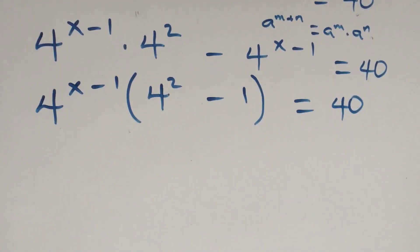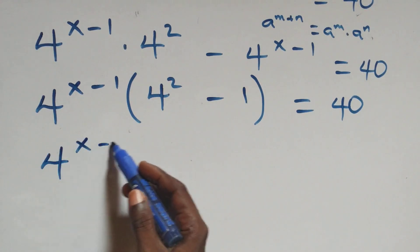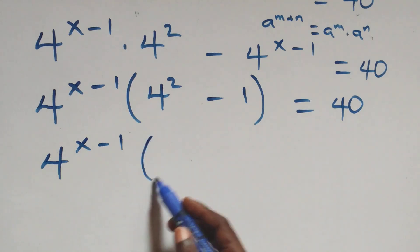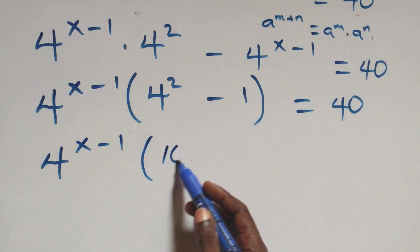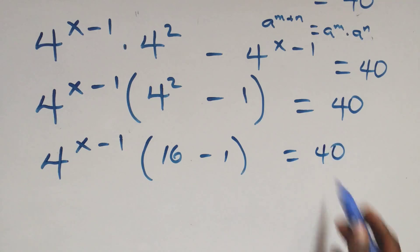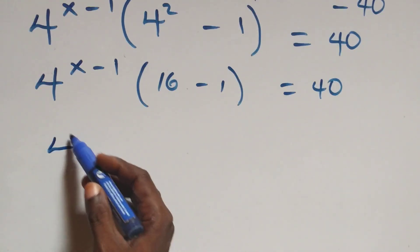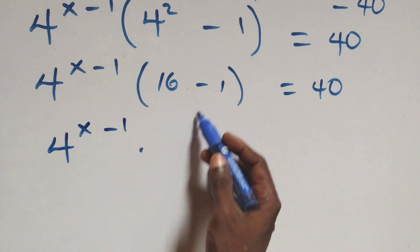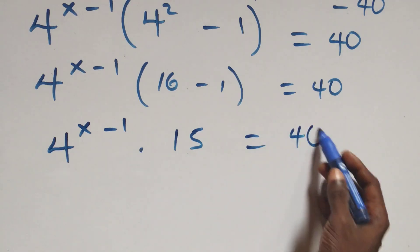This simplifies the same expression: 4 raised to the power x minus one, times the bracket 4 squared minus one. Since 4 squared is 16, we have 16 minus 1 equals 15, giving 4 raised to the power x minus one times 15 equals 40.